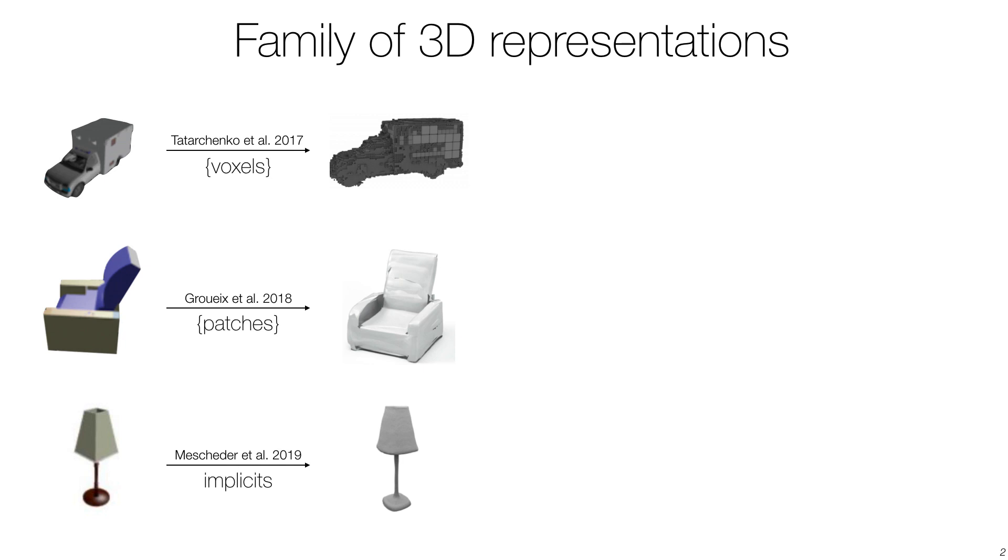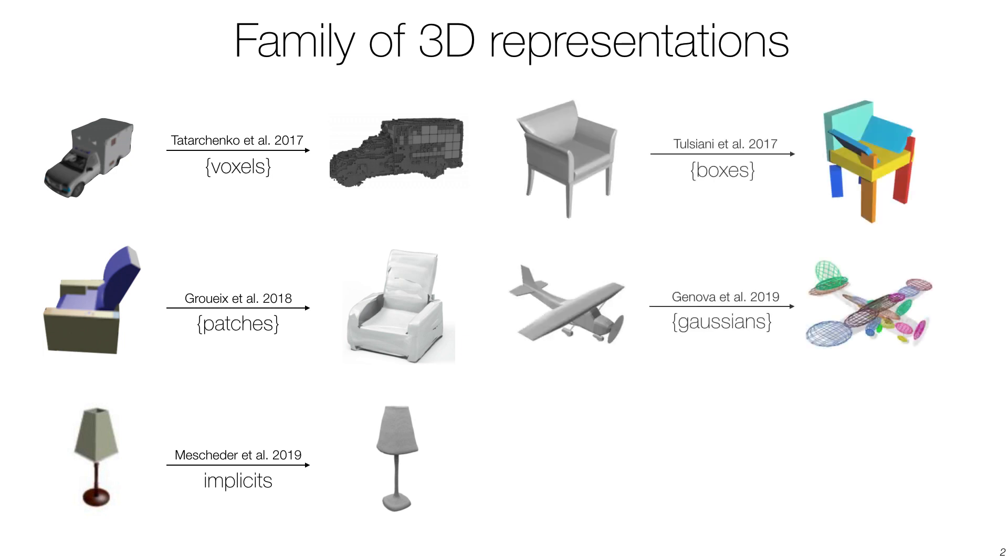While these represent the shape globally, researchers have also proposed the use of primitives, such as oriented boxes and non-oriented Gaussians. Today we introduce the use of convex decompositions as universal approximators of 3D geometry.